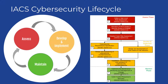The IACS Security Lifecycle is a comprehensive framework for managing the cybersecurity of industrial automation and control systems. It provides guidelines and best practices for designing, implementing, maintaining, and continuously improving the cybersecurity of IACS in industrial and critical infrastructure environments. The security lifecycle consists of three primary phases: assess, develop and implement, and maintain.